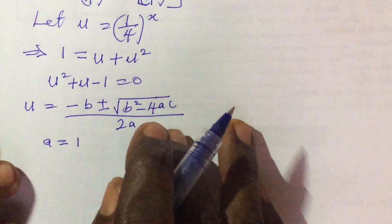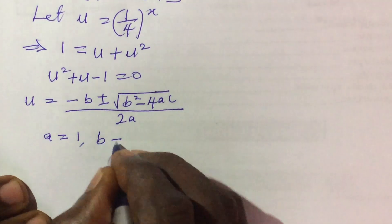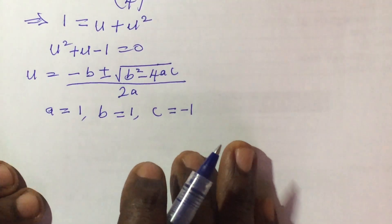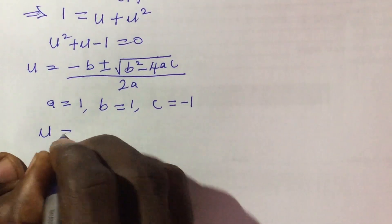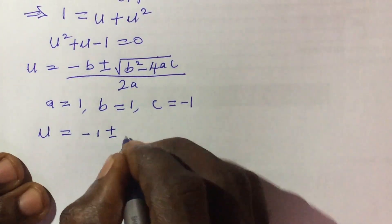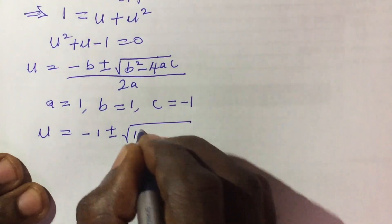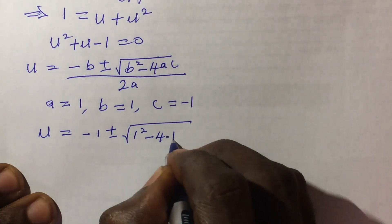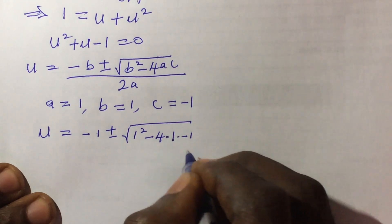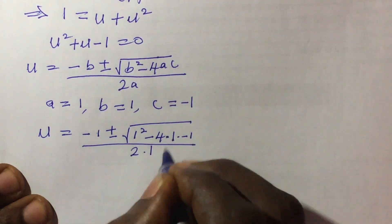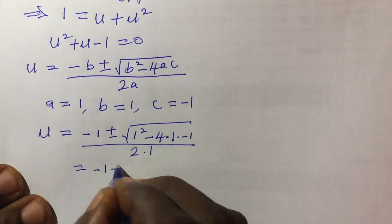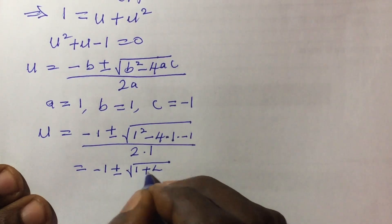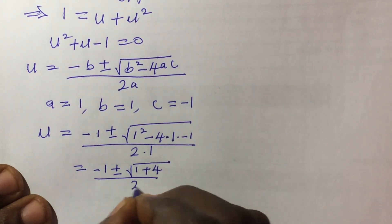The coefficient of u squared is a = 1, b = 1, and c = -1. So substituting into the formula we're going to have u equal to minus 1 plus or minus the square root of 1 squared minus 4 times 1 times minus 1, all over 2 times 1. This gives us minus 1 plus or minus the square root of 1 plus 4, all over 2.